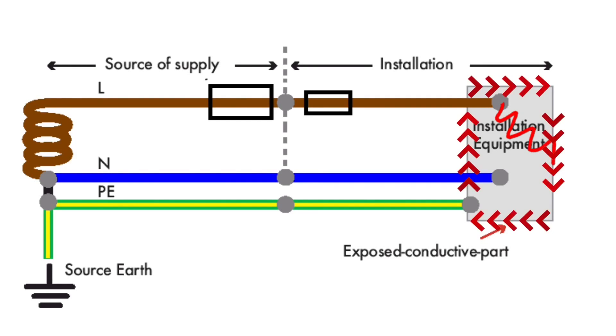The exposed conductive part would become live. This is connected to the circuit protective conductor, the CPC. This would become live.